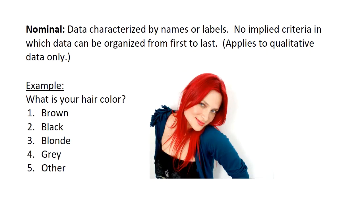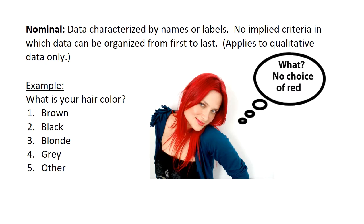The nominal level is the lowest level of measurement. Data is characterized by names or labels — there's no criteria that would make sense to organize the data from first to last, and you can't really do mathematical calculations with it. A good example is hair color.